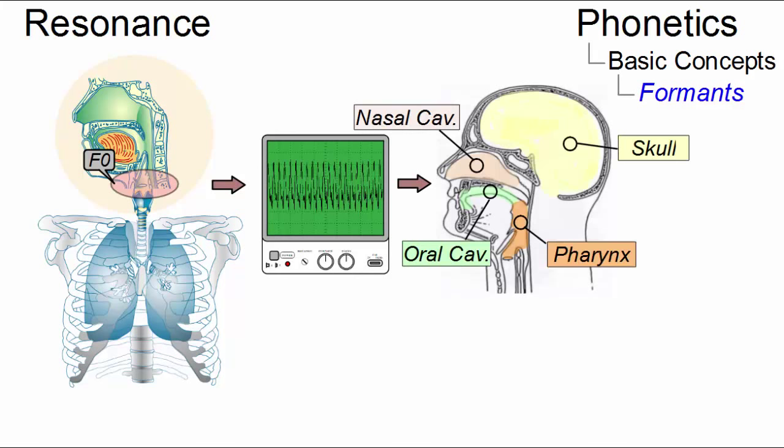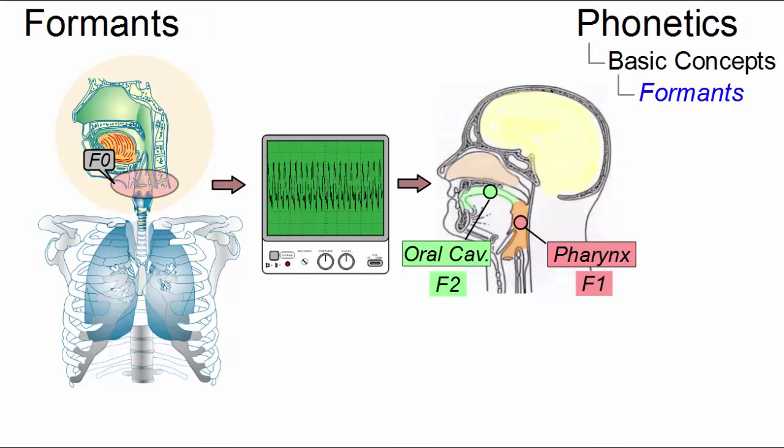The pharynx, the oral cavity, the nasal cavity, and the skull, where the pharynx and the oral cavity have shown to be the most important. They are associated with F1 and F2.